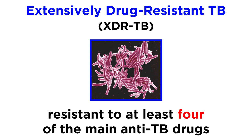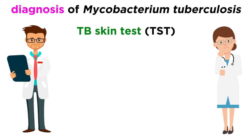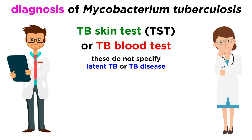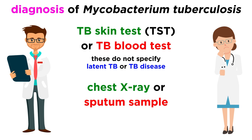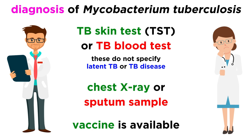To diagnose TB, doctors use either a TB skin test, called a TST, or a TB blood test. A positive TB skin or blood test simply means that the person has been infected with TB and does not specify whether the person has latent TB or TB disease. Often a chest x-ray or sputum sample — which means saliva — can help with diagnosis. There is a vaccine to prevent TB disease that is used specifically in some countries to prevent severe TB in children, though it is not generally recommended for adults.